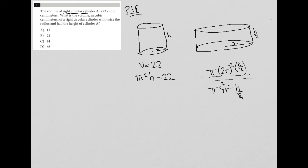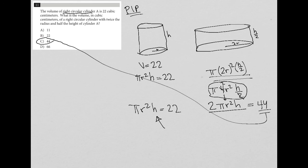I'm going to take my number out to the front, so I'd have 2 times πr²h. That's the simplified version. Now, don't forget, I already know that πr²h equals 22. So 2πr²h is just two times this, which means 2πr²h is 44. Therefore, my answer is choice C.